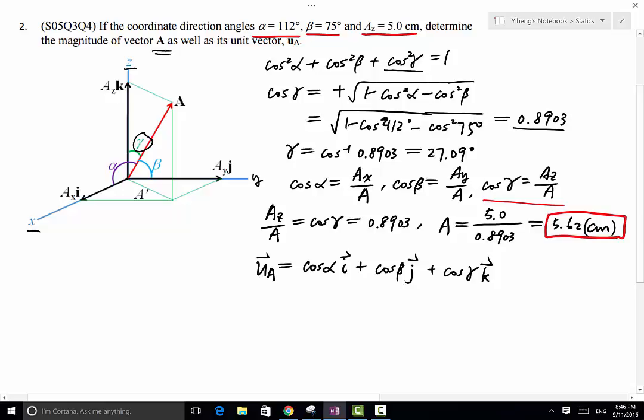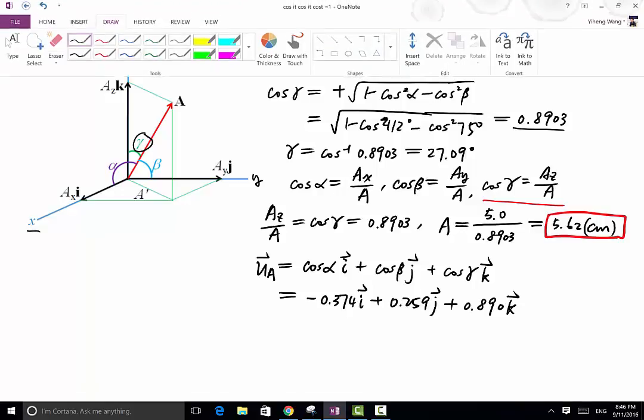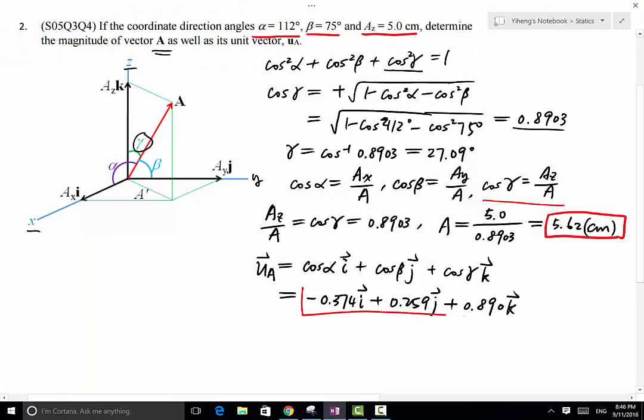So since we already know alpha, beta, and gamma respectively, we can simply substitute them into this equation and get the result. That is cosine 112 degree i plus cosine 75 degree j plus 0.890k, that's cosine gamma. So that's the answer.